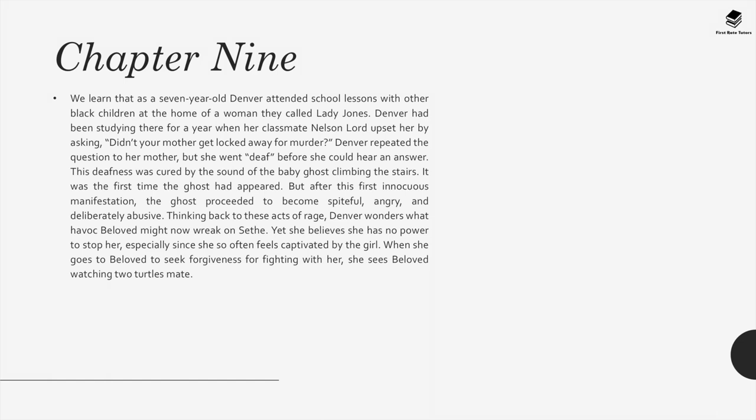We learn that as a seven-year-old, Denver attended school lessons at the home of a woman they called Lady Jones. Denver had been studying there for a year when her classmate Nelson Lord upset her by asking, 'Didn't your mother get locked away for murder?' Denver repeated the question to her mother but went deaf before she could hear an answer. This deafness was cured by the sound of the baby ghost climbing the stairs — the first time the ghost had appeared, after which it became spiteful, angry, and deliberately abusive. Thinking back to these acts of rage, Denver wonders what havoc Beloved might now wreak on Sethe, yet she believes she has no power to stop her. When Denver goes to Beloved to seek forgiveness, she sees Beloved watching two turtles mate.